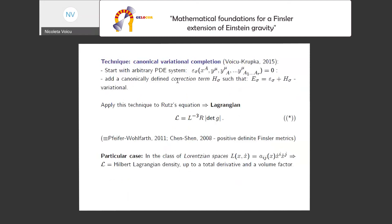Rutz stated already in 1993 that this R should be zero in vacuum, but this equation cannot be obtained by an action. The technique we used was so-called variational completion: given an arbitrary PDE system of any order, we can always add a correction term such that it becomes variational, at least locally. When applying this technique to this equation and taking into account that our Lagrangian should be zero-homogeneous and invariant under rescalings, we got a unique answer.